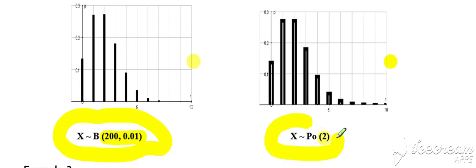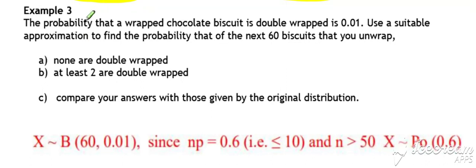The lambda value equals n times p. You can get questions that are set up and start as a binomial distribution. In this particular example, p is 0.01, 60 biscuits you unwrap. So we've got a binomial distribution where n is 60 and p equals 0.01. We want to work out the probability that none are double wrapped, but the question says use a suitable approximation.